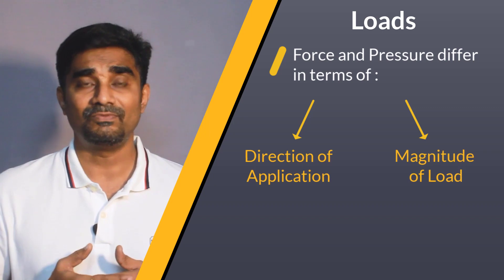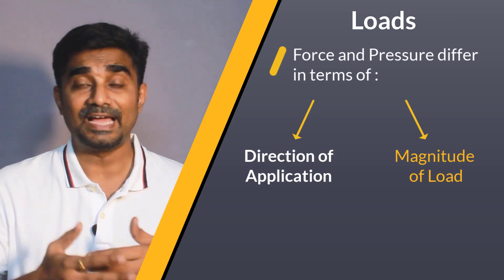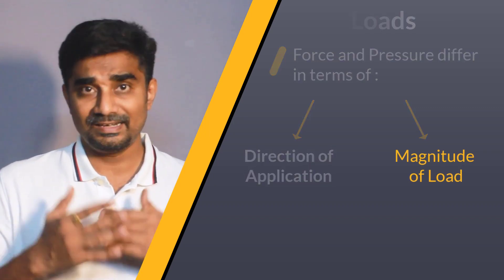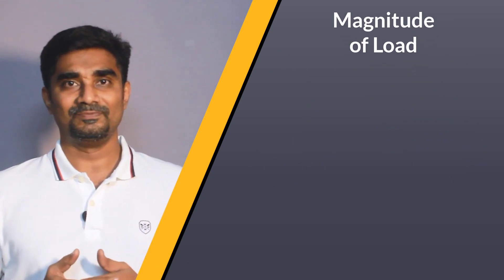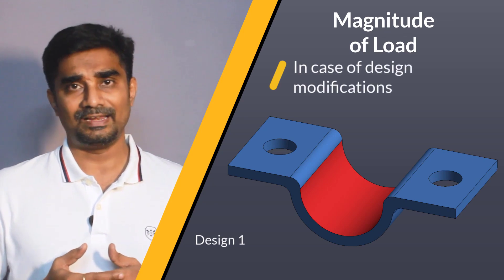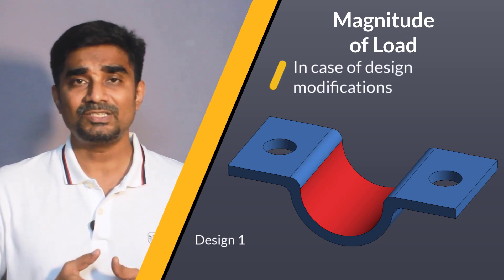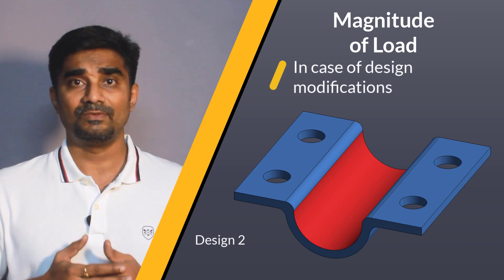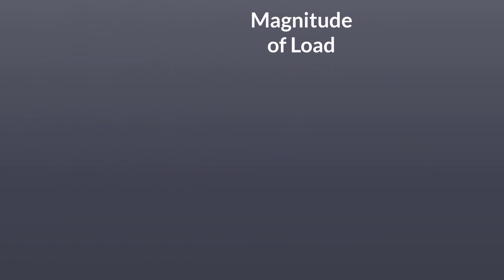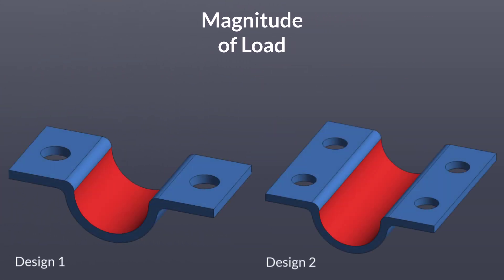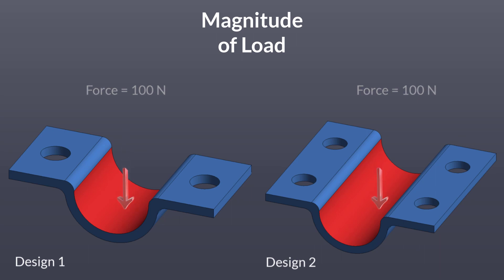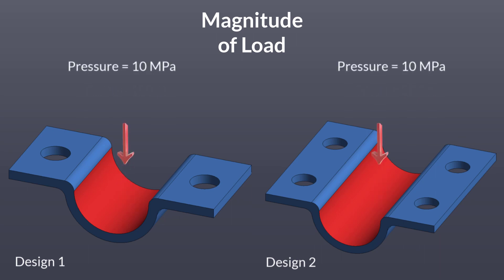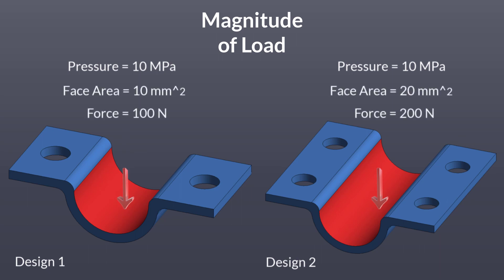After discussing the difference between force and pressure based on the direction of load application, let us understand the difference based on the magnitude of the load. It is not unusual for analysts to perform a simulation on a given design, then update the simulation for a different geometric design. In such cases, after refreshing the geometry in ANSYS Mechanical, any force load maintains the magnitude of the applied force. However, for pressure, the pressure value is maintained, but if the area of the scoped geometry has changed, the total force magnitude will change.